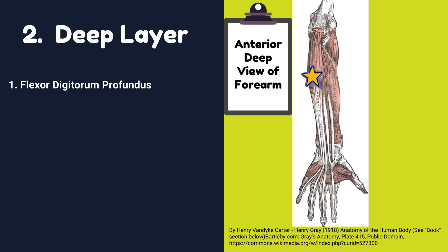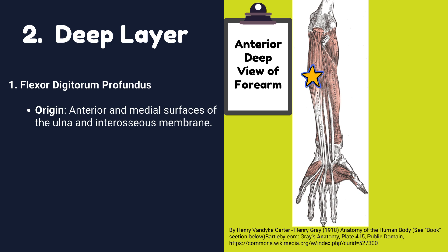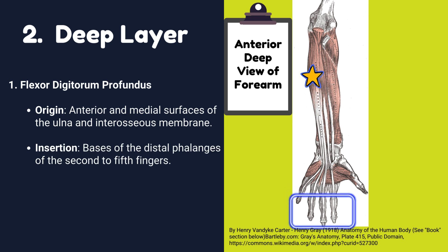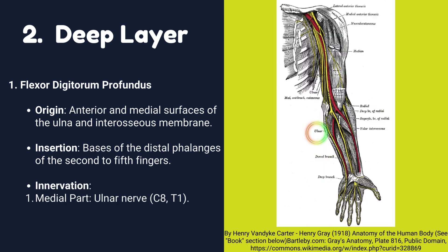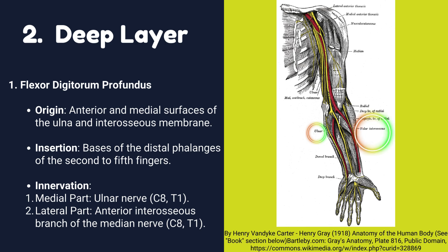Number one: Flexor digitorum profundus. Origin: it originates from the anterior and medial surfaces of the ulna and interosseous membrane. Insertion: it is inserted into the bases of the distal phalanges of the second to fifth fingers. Innervation: the medial part is innervated by the ulnar nerve, and the lateral part is innervated by the anterior interosseous branch of the median nerve.